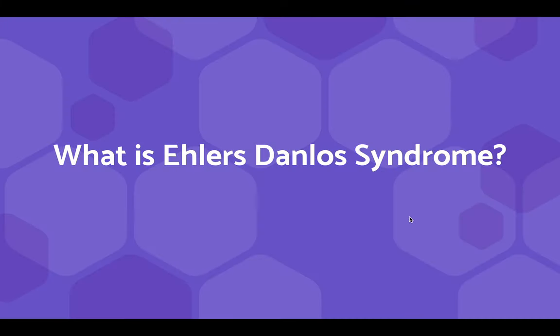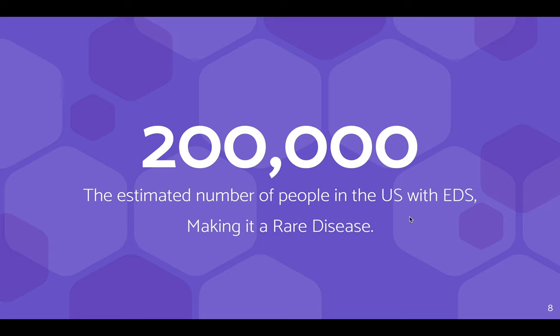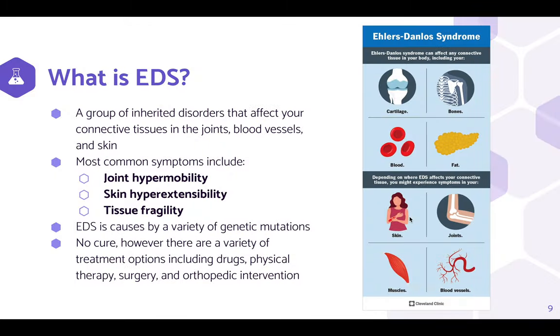Introduction — what is Ehlers-Danlos Syndrome? An estimated 200,000 people in the U.S. have EDS, which makes it a rare disease. EDS is a group of inherited disorders that affect your connective tissues in the joints, blood vessels, and skin.